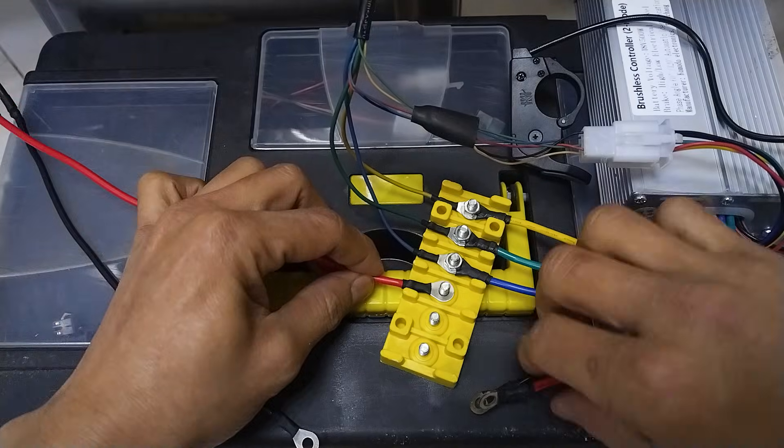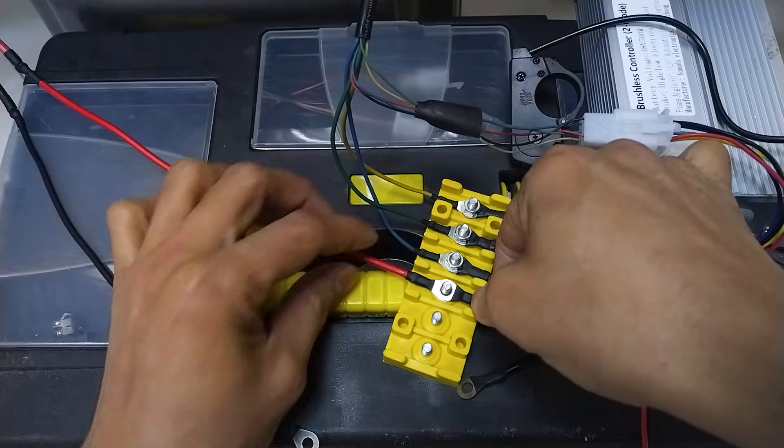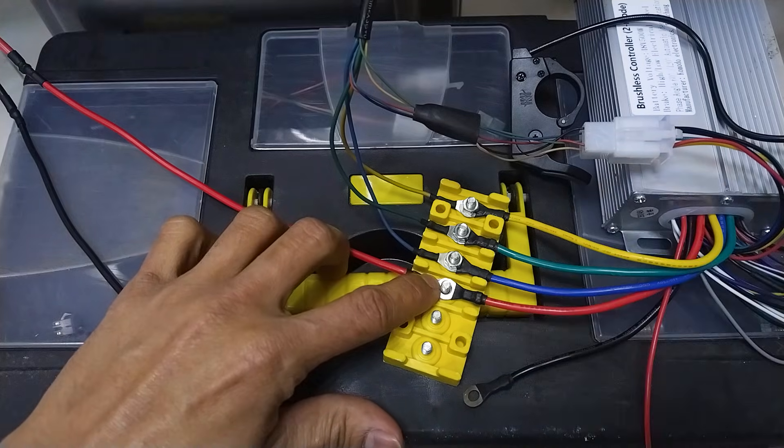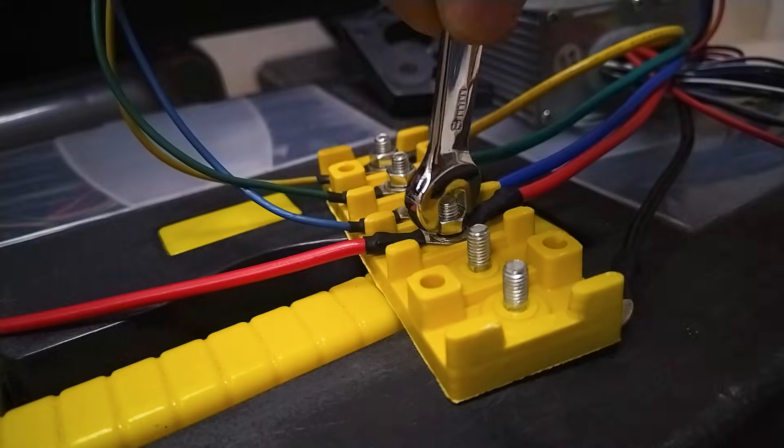Carefully place the battery positive line and the controller positive line terminals together on one bolt of the wire connection box. Then secure with a nut. Make sure to tighten enough.